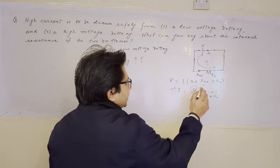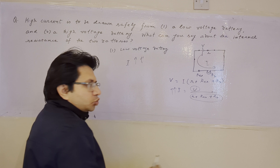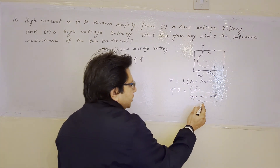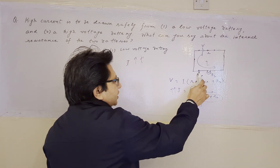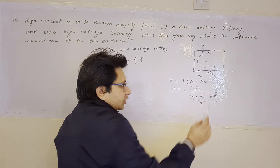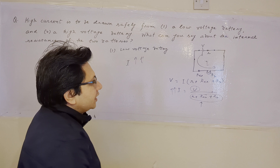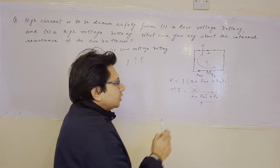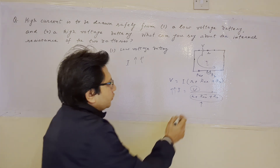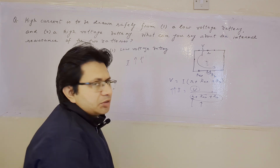To maximize current I, since V is very low the numerator is low, so we must make the denominator also low to make the fraction large. We need to minimize the denominator. The external resistance we can minimize, and the bulb resistance is fixed. We need to consider only the internal resistance — should it be higher or lower?